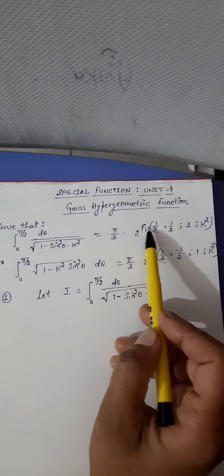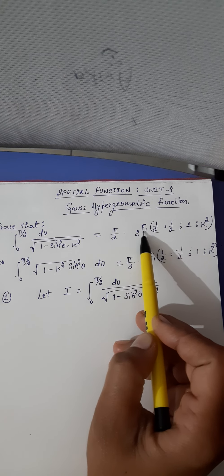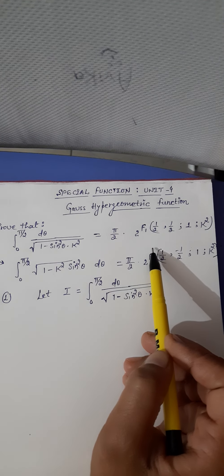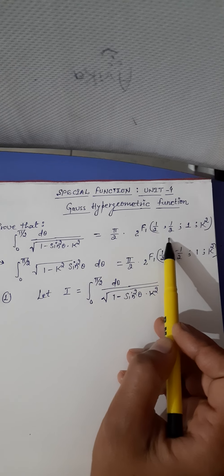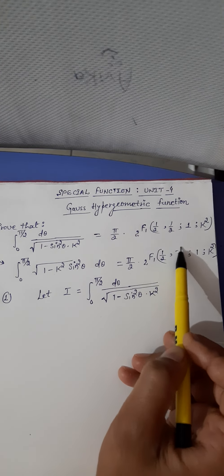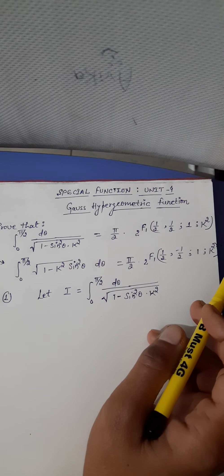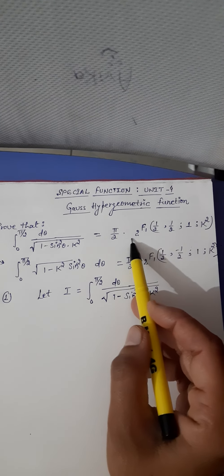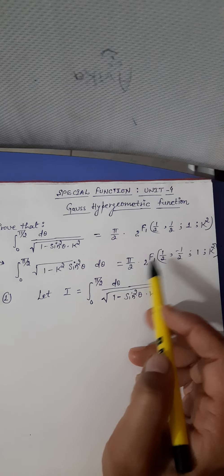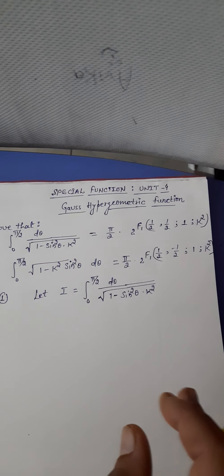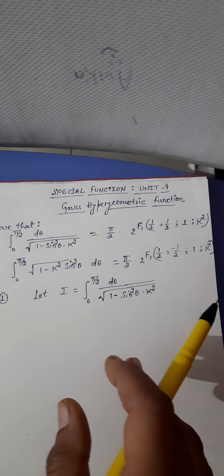2F1 — everyone should be clear what 2F1 means: 'two' denotes parameters in the numerator and one parameter in the denominator. It is defined as summation from n=0 to infinity of (α)_n (β)_n divided by (γ)_n · n! times x raised to the power n. This is the Gauss hypergeometric function series definition.